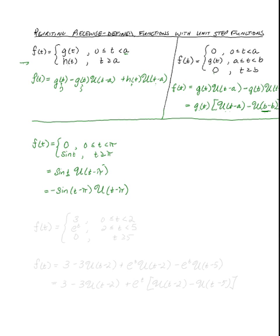All right, let's look at another piecewise defined function, f of t equals, and this time we'll do a three parter, so three if we are less than two, and e to the t if we are between two and five, including two and zero, whenever t is greater than or equal to five.